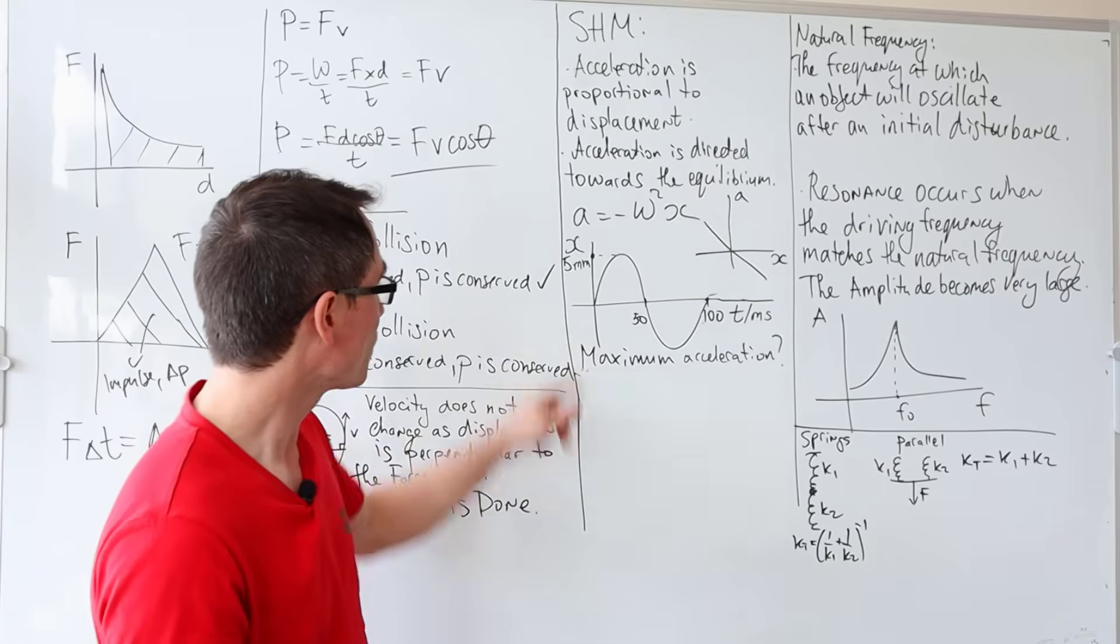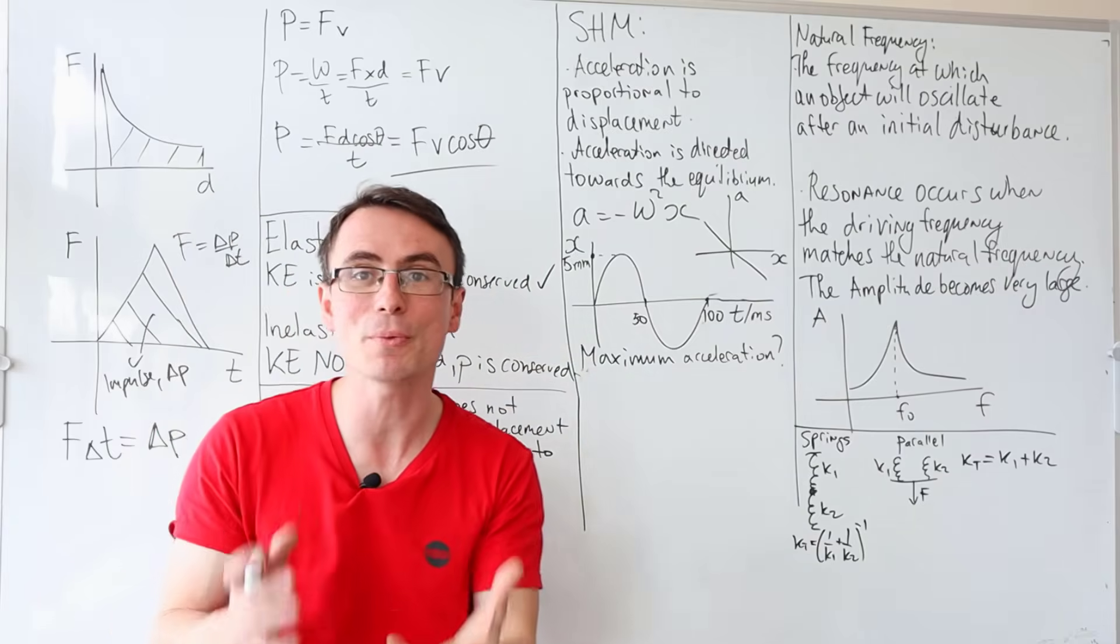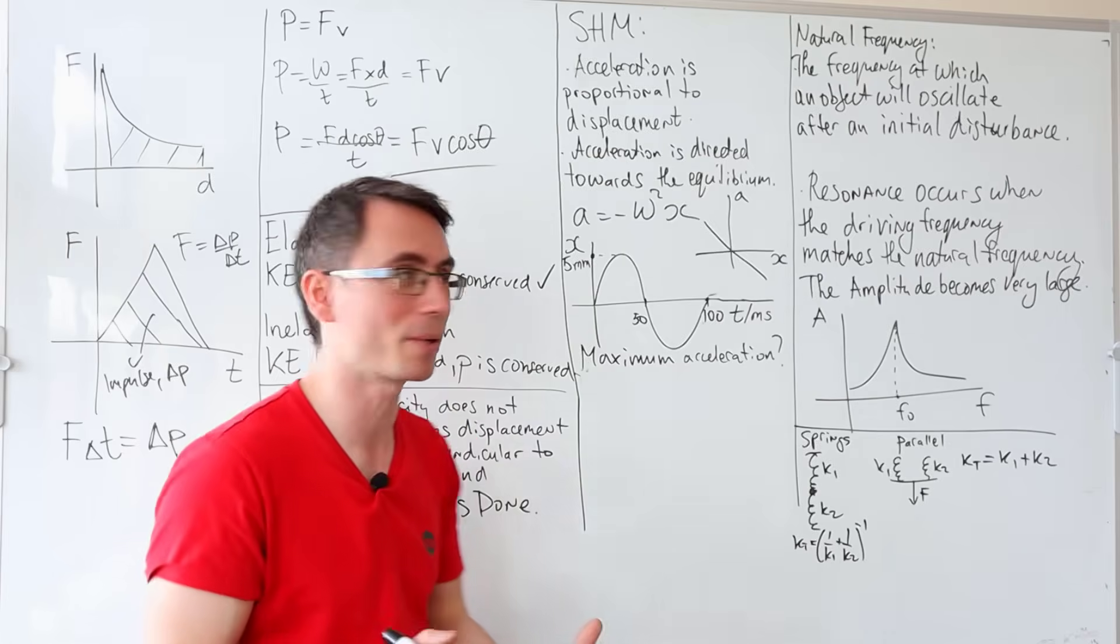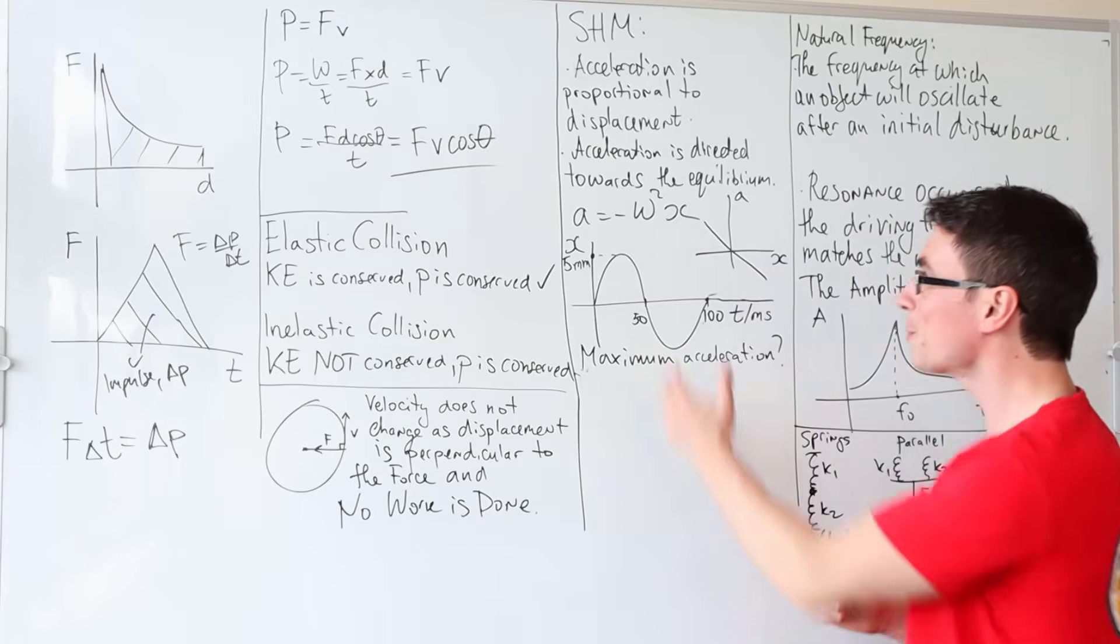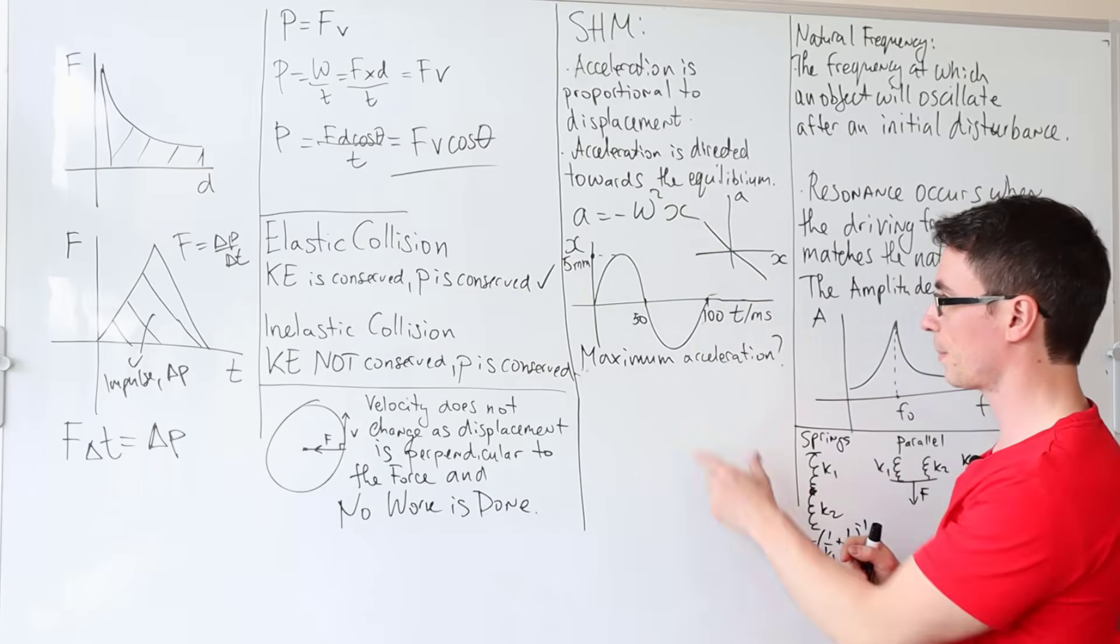Here's a little practice question. We have the following graph of x against t. Can we work out the maximum acceleration from the graph? Well, we're going to use the defining equation that a = -ω²x.